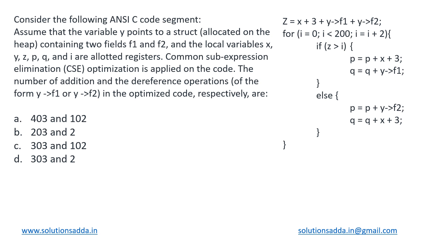This is a compiler design question. We are given a C code where we assume a structure allocated from the heap containing two fields f1 and f2. We are dereferencing it using y→f1 and y→f2 because it is dynamically allocated memory. The local variables x, y, z, p, q, i are stored in registers. We are applying the Common Sub-expression Elimination (CSE) optimization technique, and need to determine the number of addition and dereference operations in the resulting optimized code.